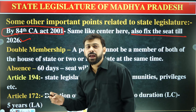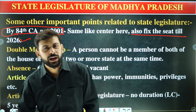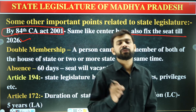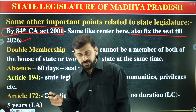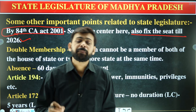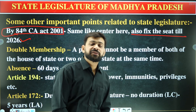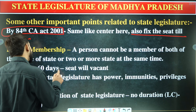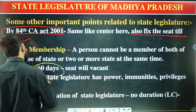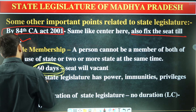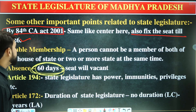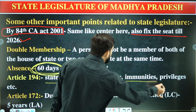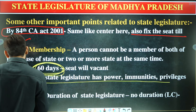The maximum period a member can remain absent from the state legislature is 60 days. Article 172 deals with the duration of the state legislature — no duration is specified for the legislative council, while the legislative assembly has a term of five years. Article 173 provides qualifications for membership of the state legislature. Article 194 gives the state legislature powers, immunities, and privileges.